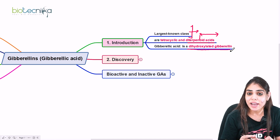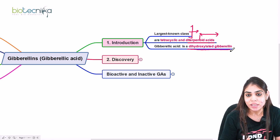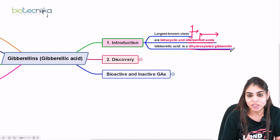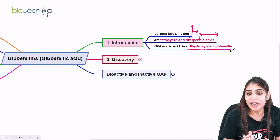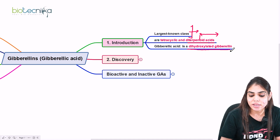So we have seen this is a tetracyclic compound, a diterpenoid acid, as well as a dihydroxylated gibberellin — and that makes GA an active gibberellic acid.